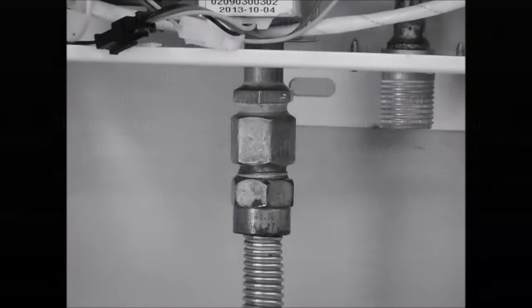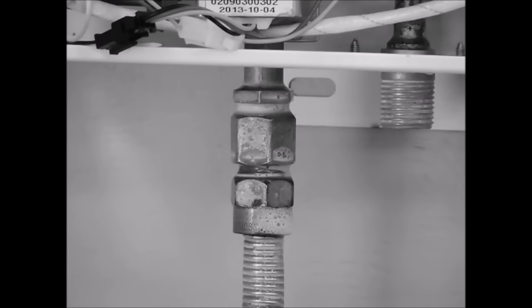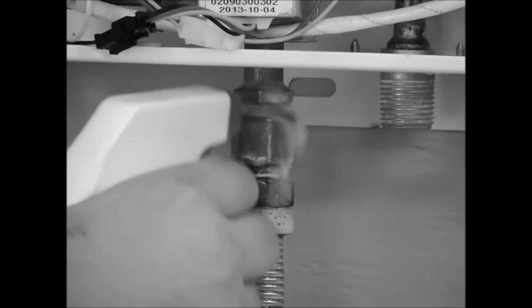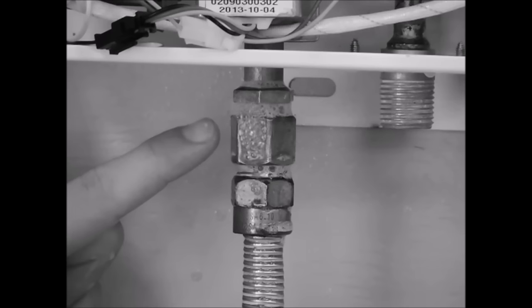Next, confirm you have appropriate gas pressure which is a minimum of 0.41 psi or 11 inches of water column. Lastly, check the connection with soapy water or glass cleaner for a leak. Bubbles will form if a leak is present. Please correct and retest if necessary.